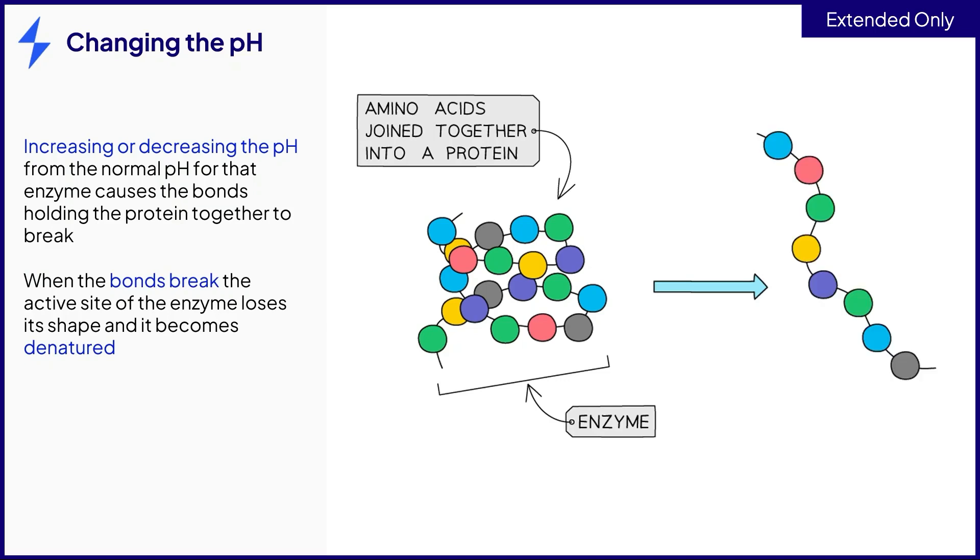When the bonds break, the active site of the enzyme loses its shape and the enzyme becomes denatured, meaning the active site can no longer bind to the substrate and the enzyme cannot catalyse reactions.